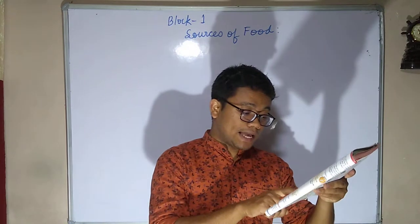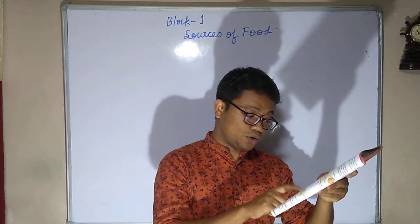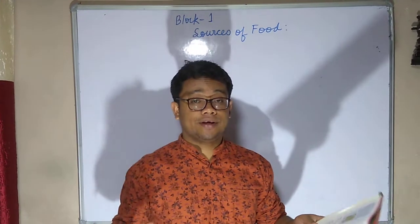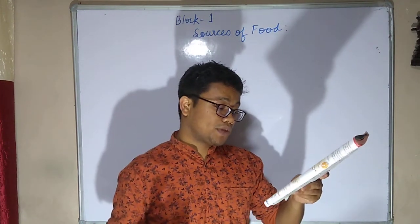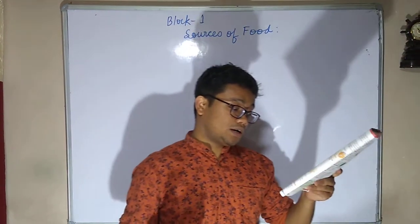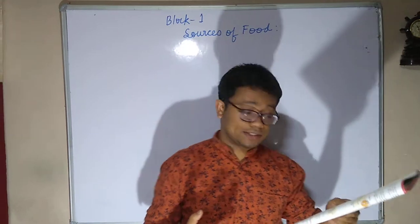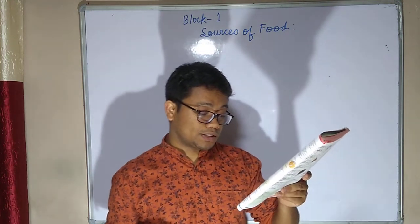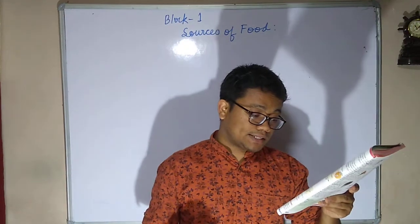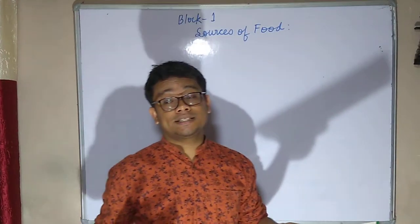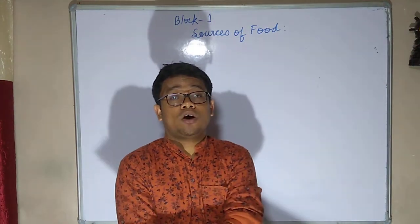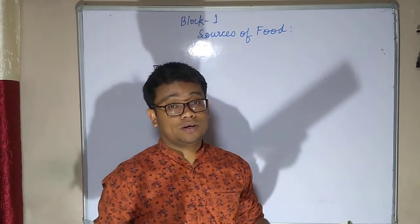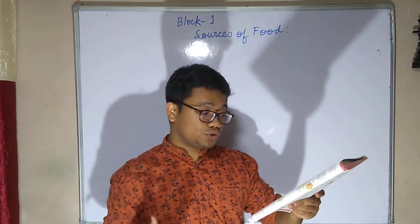Animals that give us meat include chicken, goat, and fish — these are domestic animals we raise for meat. Animals that give us milk include goat, cow, and buffalo. Birds that give us eggs include chicken and ducks. In some regions, ostrich eggs and eggs from the moa bird are also consumed.